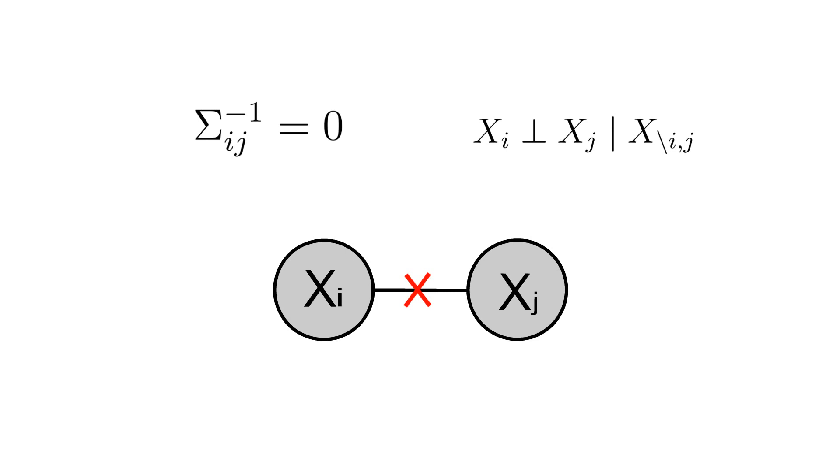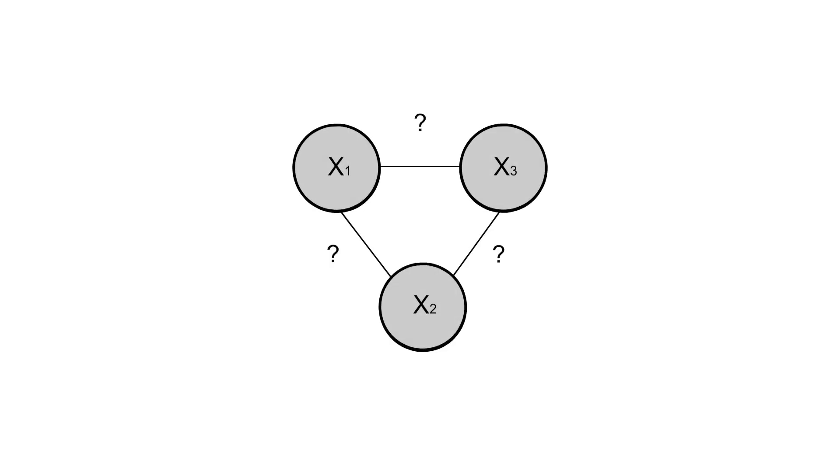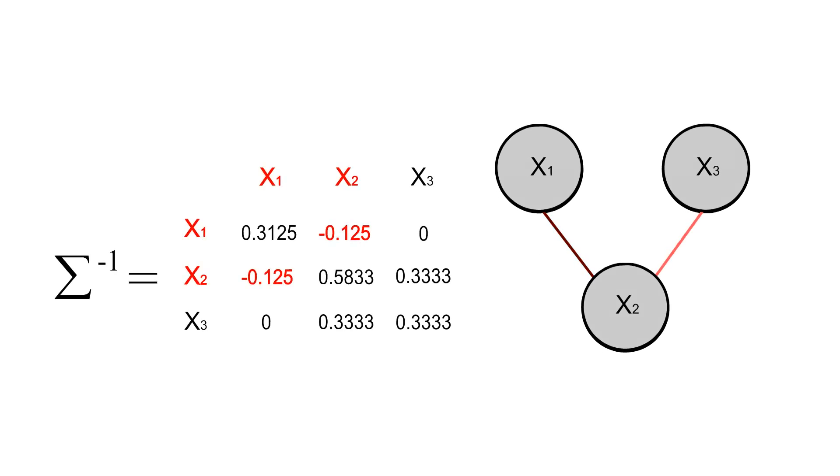This means that there is no edge connecting them in the random field structure. This automatically provides the structure of a Markov random field. Whenever we observe a non-zero value in the precision matrix, we draw an edge between their corresponding nodes.